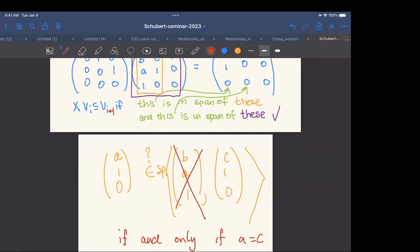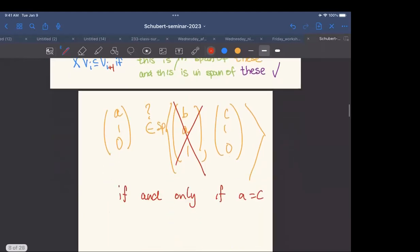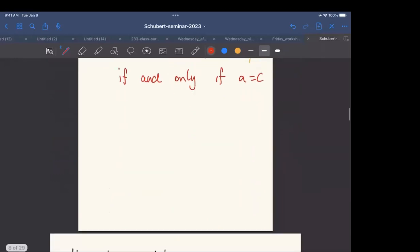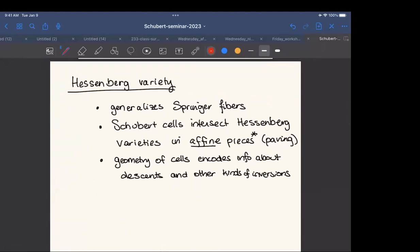And then I would say, 0, 1a is in the span of 0, 1c if and only if A equals c. So on the one hand, I've strictly relaxed the conditions from the springer fiber. I've expanded the number of flags that satisfy the condition, as well as the number of Schubert cells that are represented in the Hessenberg variety. But on the other hand, I've also got visibly some conditions on the entries that can, in general, get quite complicated.